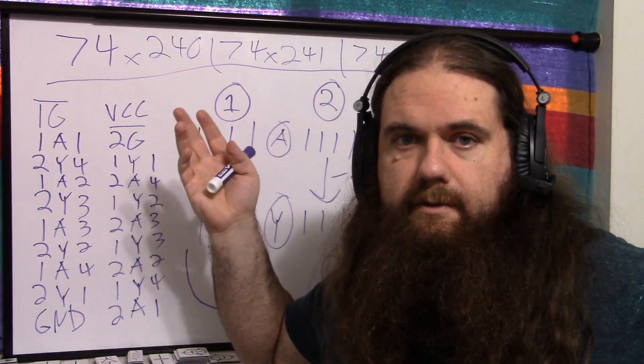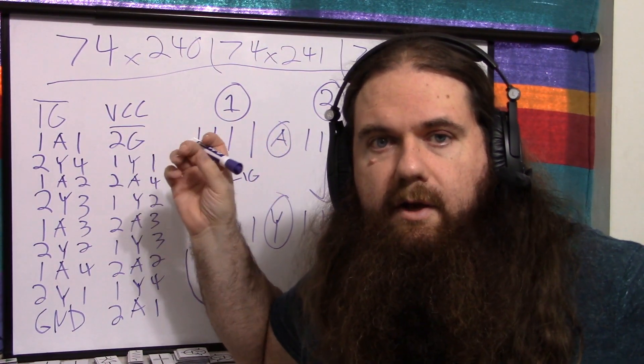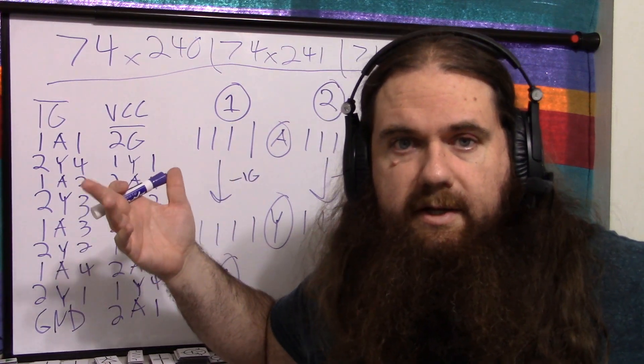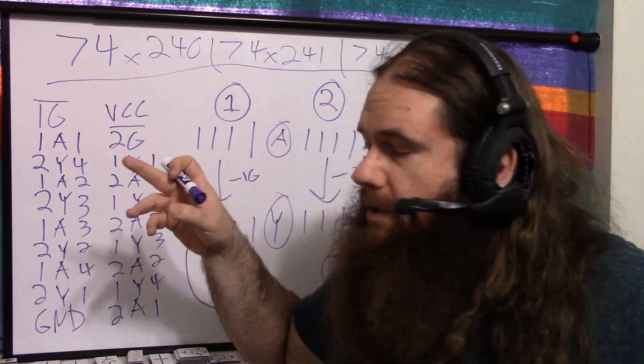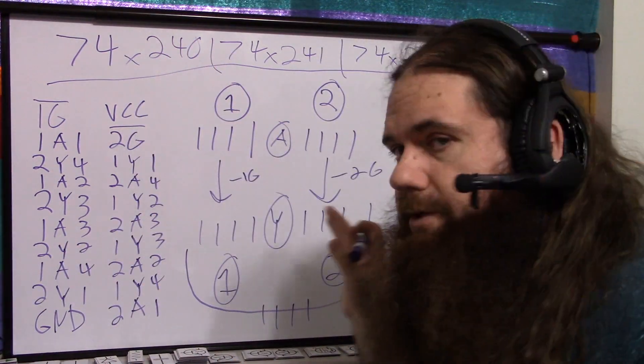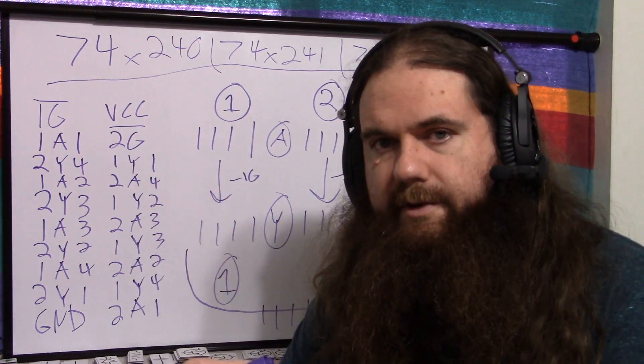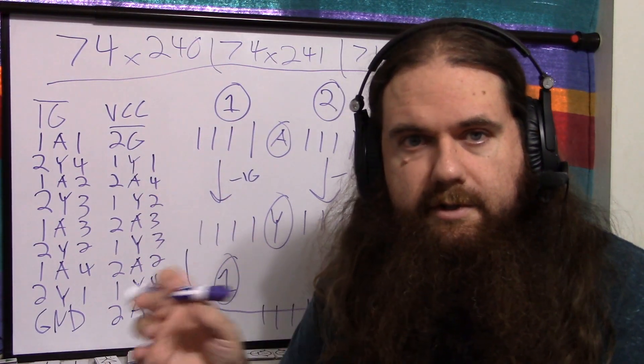So one thing you could use this for, because you've got inverting and not inverting, you have up to eight bits. You could say, well, sometimes I want them inverted and sometimes not. This is actually a thing I need for another project. So you could put the same signals into a 240 and a 244 and then use the enable and disable signals to say, okay, here they're not inverted and here they are inverted, and you just switch.